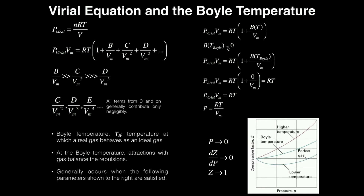So if the temperature is above or below the Boyle temperature, this would be a non-zero term. But at the Boyle temperature, this B term goes to zero. Substituting in the Boyle temperature, P times V equals RT times one plus B as a function of T sub Boyle over the molar volume, and this whole B term goes to zero.